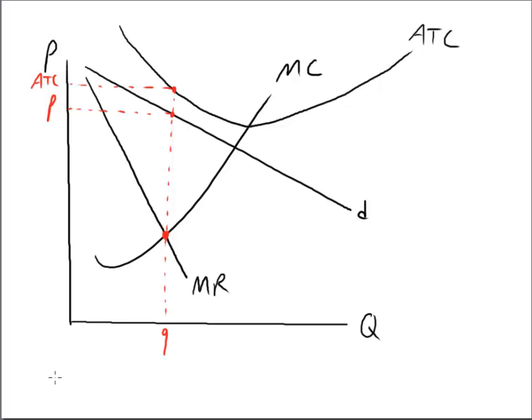You might remember that profit equals total revenue minus total cost. Total revenue equals price times quantity, and total cost equals average total cost times quantity.